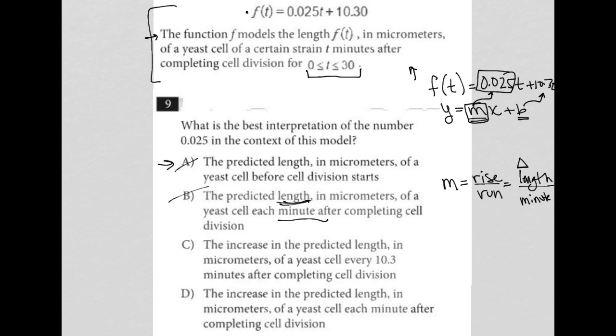Choice C, the increase in the predicted length in micrometers of a yeast cell every 10.3 minutes after completing cell division. Nope. The 10.3, that's the y-intercept. So that's not a part of this.